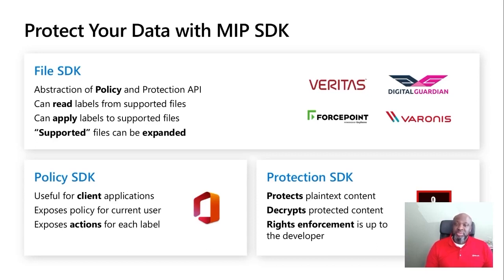The Policy SDK is best suited for client applications. The File SDK is an abstraction of the Policy and Protection SDK. It provides an easy-to-use interface for reading labels defined in Azure, and based on those policies, labels can be read from or applied to supported file types.